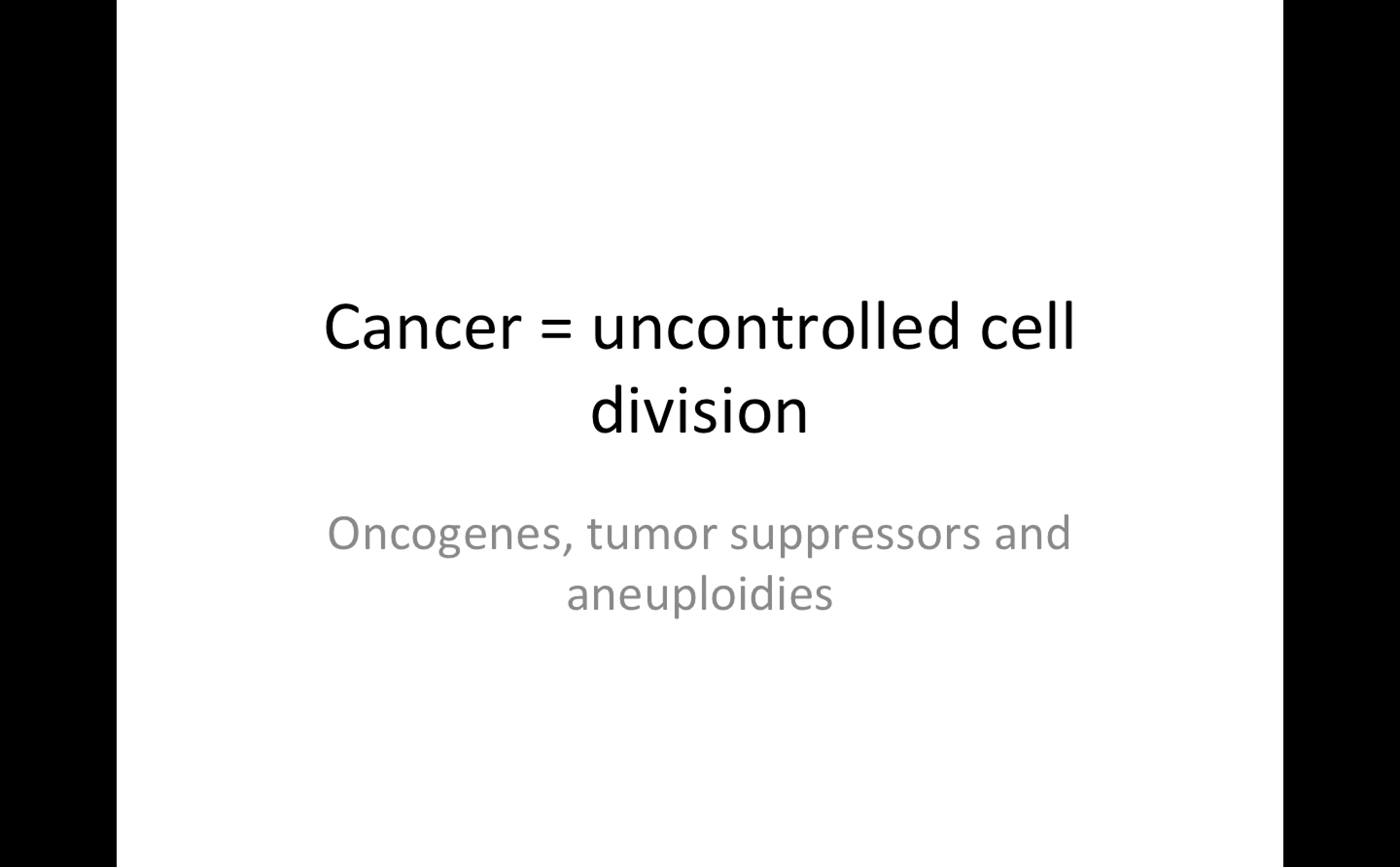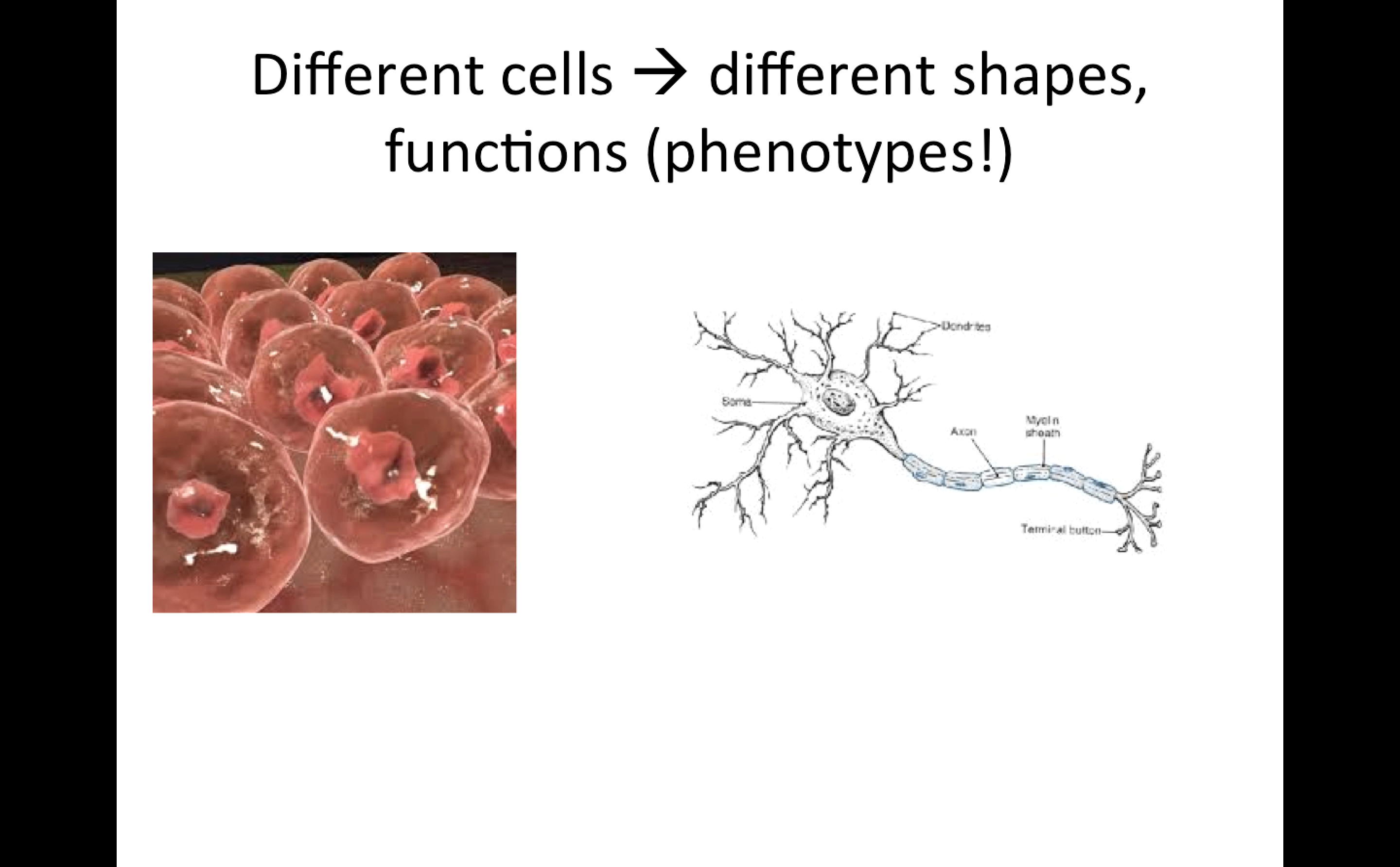Cell division when there shouldn't be cell division. So we've talked about how different cells with the same DNA can have very different phenotypes. Over here, we have a blood cell and a neuron that could be from the same person, and yet these two cells with the same DNA have totally different shapes, different functions, and different phenotypes.